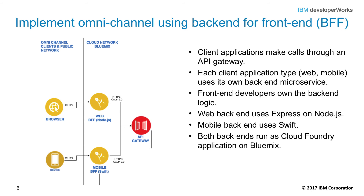The web and mobile app invoke their own back-end microservices to fetch data. We call this component BFFs, following the back-end for front-ends pattern. In this layer, front-end developers usually write back-end logic for their front-end. The web BFF is implemented using a Node.js Express framework, and the mobile iOS BFF is implemented using server-side Swift. These microservices run in Bluemix as Cloud Foundry applications.